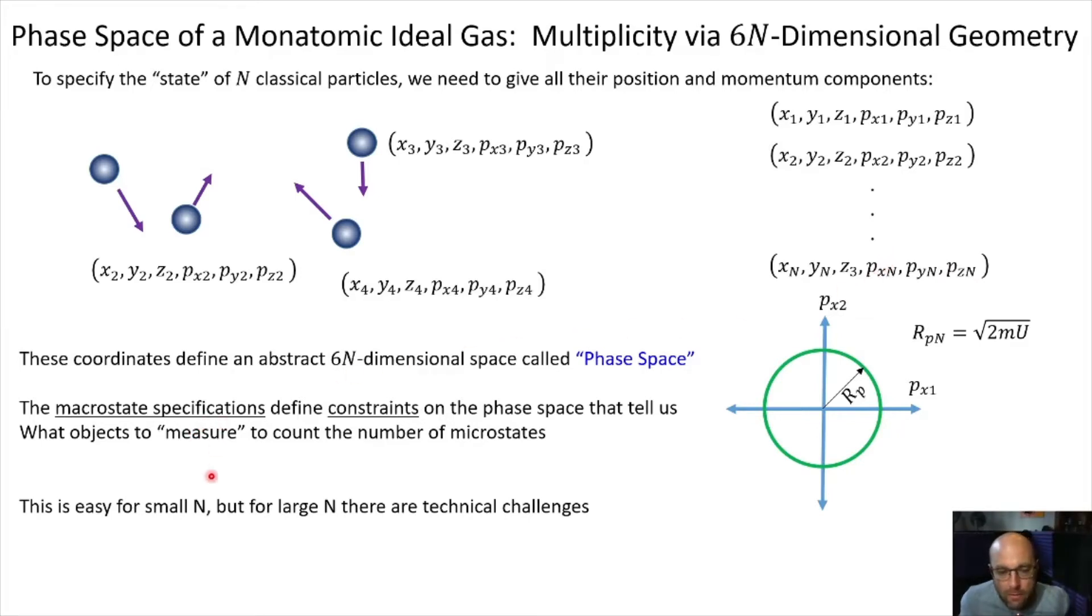And then all we need to do is measure the geometry of the allowed regions of phase space to count the microstates and obtain the multiplicity of the specified macro state. So as we showed last time, if you've got small n, it's fairly easy to figure out how to do that. But for large n, it's a little bit harder.